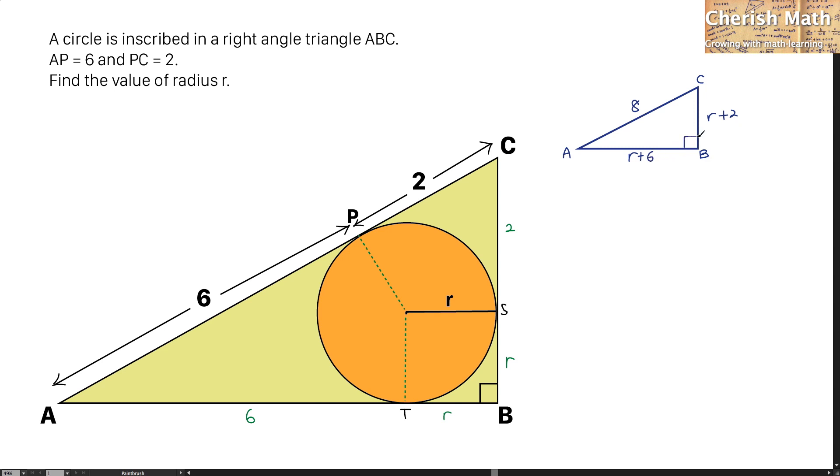And this is still at a right angle. To find the value of R, I'm going to use the Pythagorean theorem to solve it. Expanding this, and I rearrange the equation. Next, I'm going to simplify it.